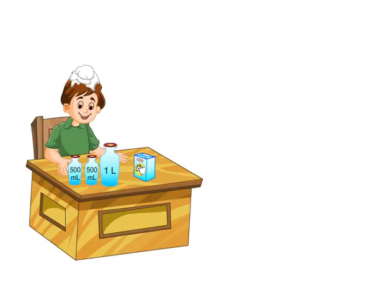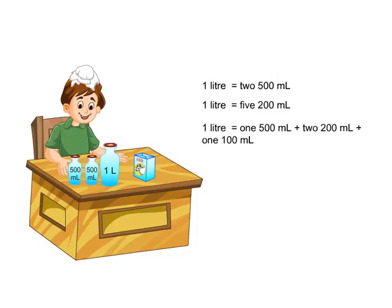Suppose Jasmeet has 1 liter of milk. He can measure it 1 time using a 1-liter container, or 2 times using a 500 ml container. Therefore, 1 liter equals 2 × 500 ml, or 5 × 200 ml, or 1 × 500 ml plus 2 × 200 ml plus 100 ml, or 10 × 100 ml.